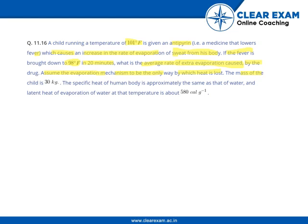The mass of the child is 30 kg. The specific heat of the human body is approximately the same as that of water, i.e., 1×10³ calories per kg per degree centigrade, and the latent heat of evaporation of water at that temperature is about 580 calories per gram.